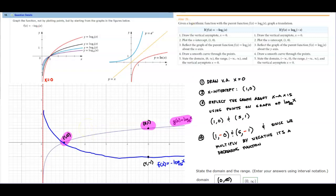So what do we want to do? Well, since the negative is being multiplied by the entire function, we're going to follow the instructions for this. So we need to draw a vertical asymptote. Here we have it at x equals zero.